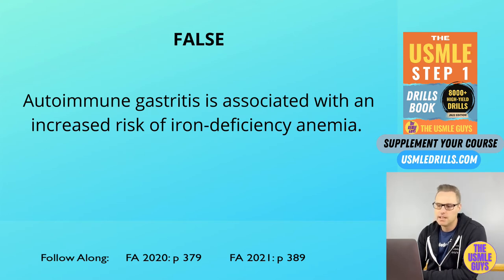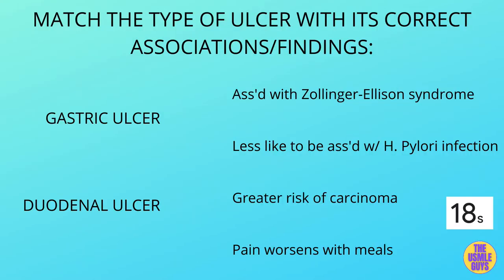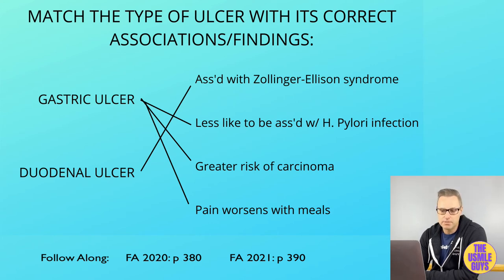Let's do a matching exercise next. I want you to match the type of ulcer — gastric versus duodenal — with its correct associated findings. Go ahead and hit the pause button, figure this one out, and then come on back. All right, here are your correct answers. Let's take a look at what we need to know about PUD to correctly answer anything thrown our way on exam day.